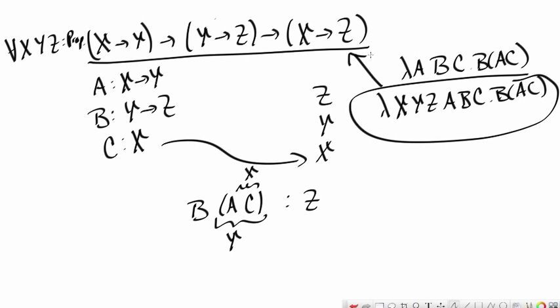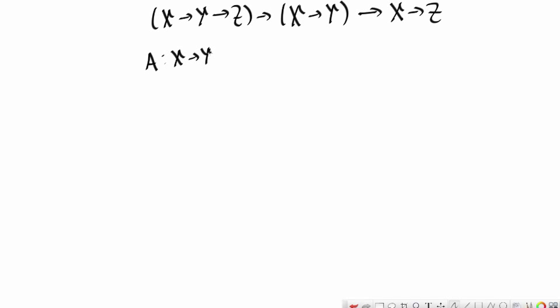Now, let's do one more. Let's assume again we have propositions x, y, and z and what we want to prove is that x implies y implies z implies x implies y implies x implies z. We'll start off by assuming an assumption a of type x implies y implies z and b of type x implies y and c of type x and the claim we need to prove is z.